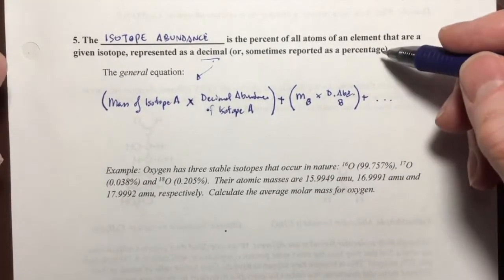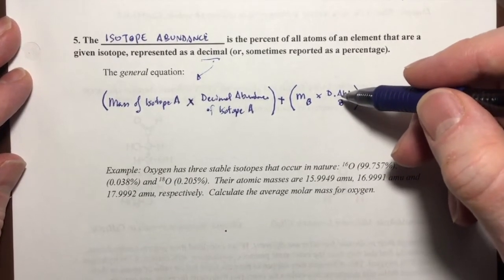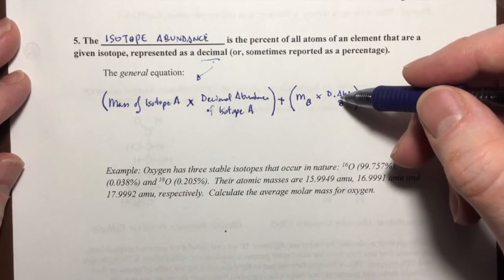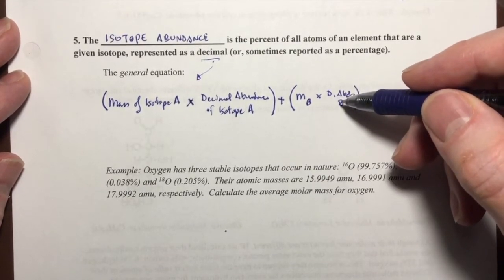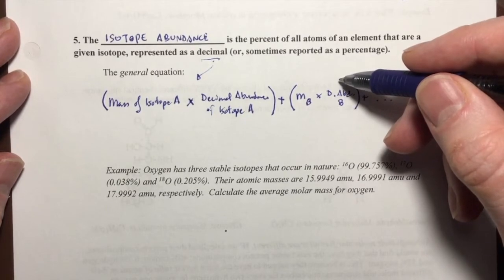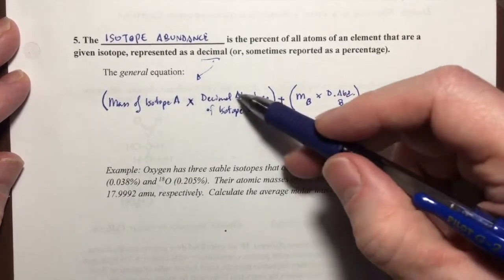This is decimal abundance. A hundred percent would be represented as a one. A fifty percent would be represented as a 0.5. This is decimal abundance.